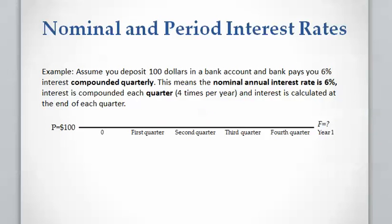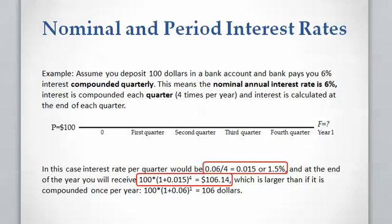Now let's assume the bank pays you 6% interest compounded quarterly, meaning the nominal interest rate is 6% quarterly, or the interest rate will be compounded 4 times a year. An interest rate is calculated at the end of each quarter. To calculate the amount of money you will receive at the end of year 1, we need to calculate the period interest rate, which is 6% divided by 4, equals 1.5%. You deposit your $100 at present time, and the bank calculates interest with a rate of 1.5% per quarter. There are 4 quarters in a year.